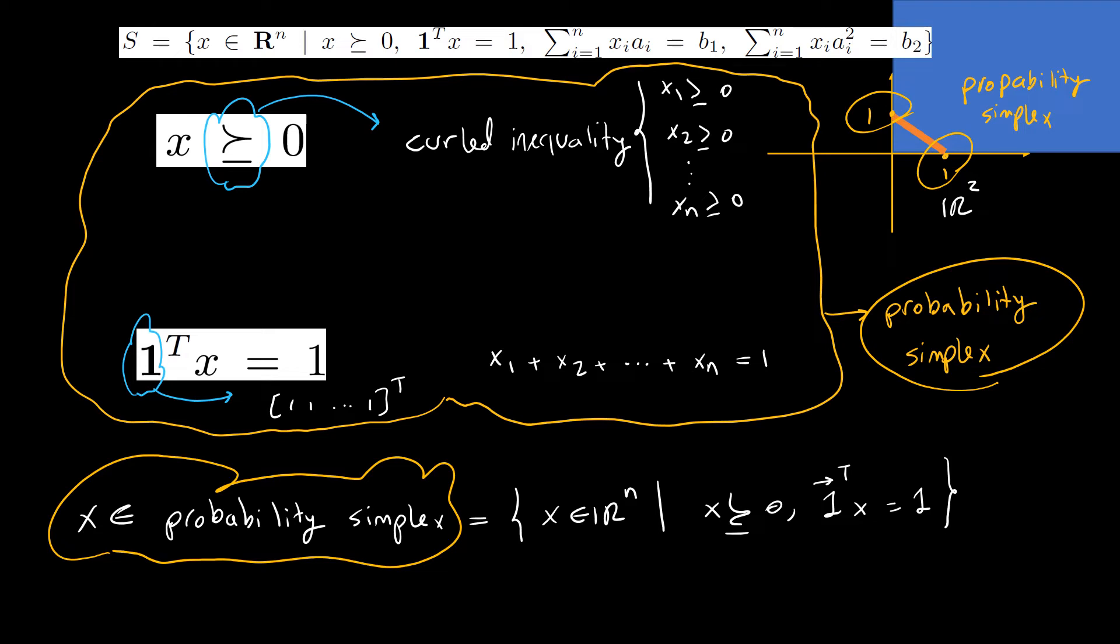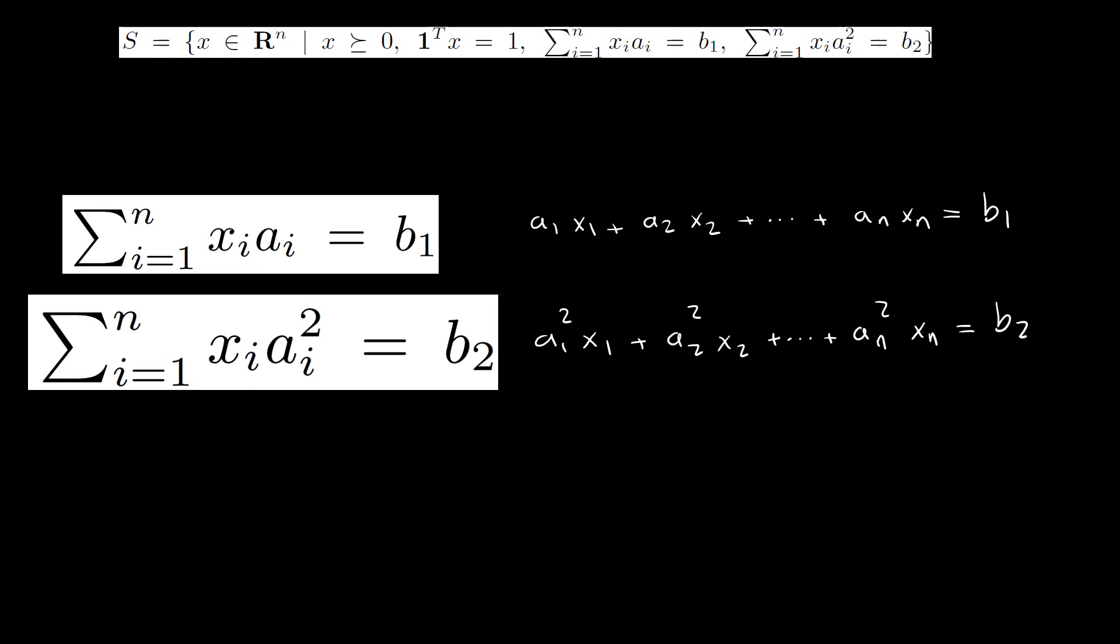The last two constraints can be expanded as two linear combinations of x_i's. Notice the exponents of x_i's are all one, so we have x_1 to the first, x_2 to the first, x_n to the first. That is why I said they are two linear combinations of x_i's.